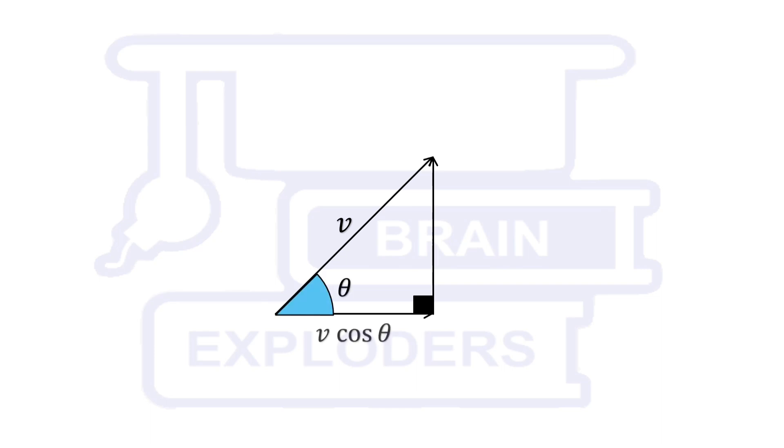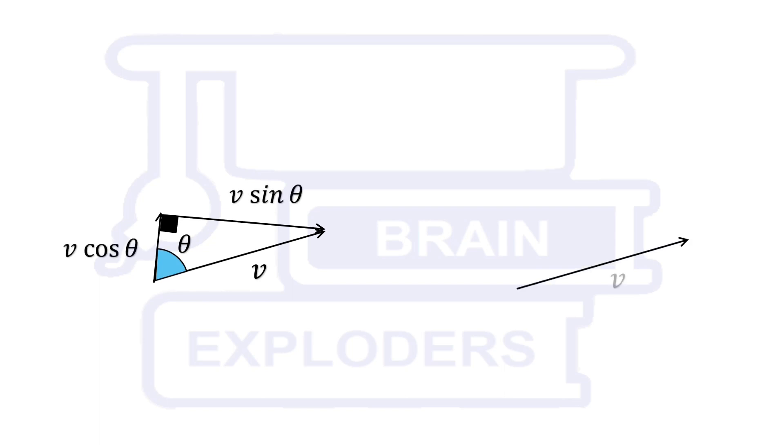Its horizontal component is v times cosine of its angle with horizontal. Not only in horizontal and vertical, but it can be resolved in any two perpendicular components also. The component which is making an angle of theta with v vector is equal to v cos theta.